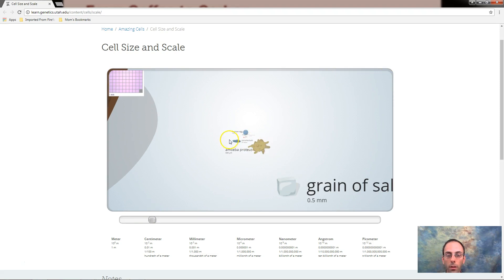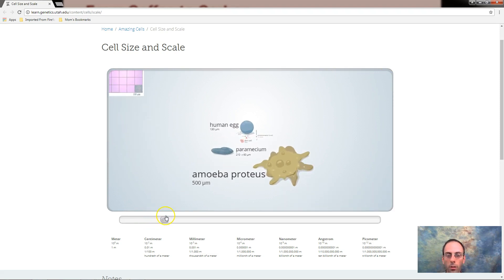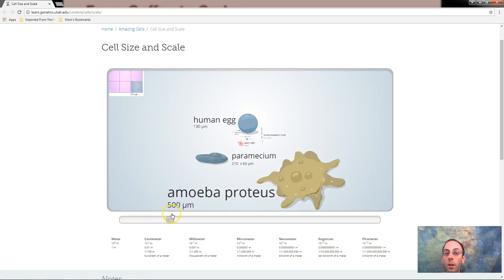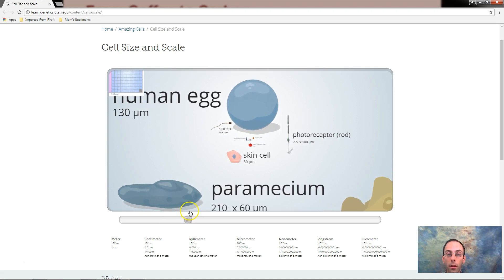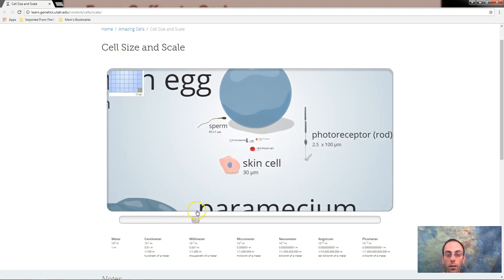So here's our grain of salt. We're seeing these kind of amoebas starting to be here. The comparison to the amoebas are paramecium. These are human egg cell compared to a sperm cell. Looking at our skin cell, photoreceptors, rods. These are in the back of our eyes.